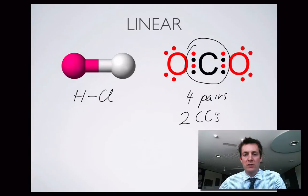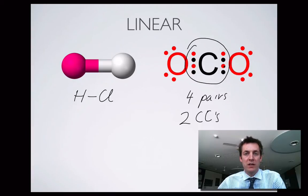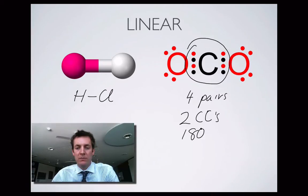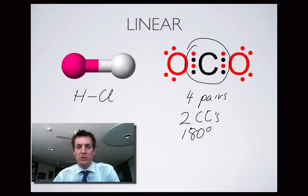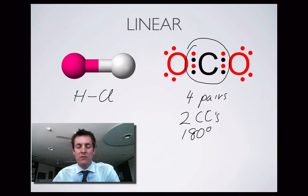Two charge centres trying to get as far away from each other as possible on the surface of a sphere will go to the poles — giving a 180 degree bond angle. Whenever you have two charge centres, you'll always have a 180 degree bond angle, and you'll always have a linear molecule. That's the first shape: two charge centres gives a linear molecule, with the charge centres 180 degrees apart.